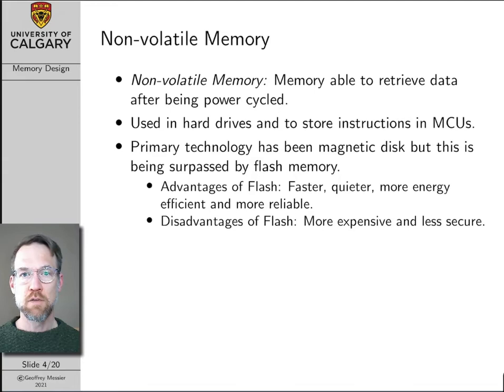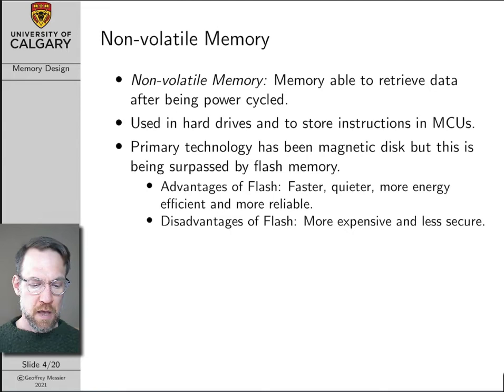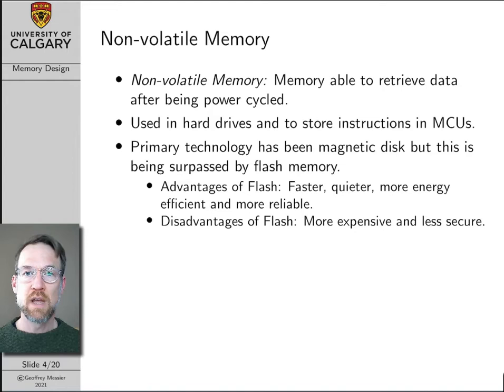However, this is changing. Arguably right now, or in the near future, flash memory is going to take over as the primary non-volatile memory technology for computers. Flash memory is basically transistor-based memory where data is stored using transistors rather than spinning magnetic disks. Flash is much faster than a regular magnetic hard drive — it's quieter and more energy efficient as well. For all these reasons, it's really coming on as the dominant memory technology.